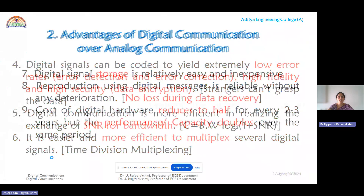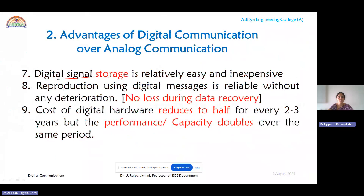Time division multiplexing is preferred over frequency division multiplexing for digital signals. Storage of digital signals is easy and inexpensive compared to analog. Reconstruction of digital messages is reliable — without any loss or deterioration, you can reproduce digital signals with less data loss during recovery. The cost of digital hardware reduces to half every two to three years, while performance doubles over the same period.